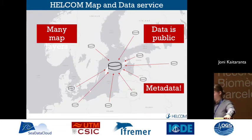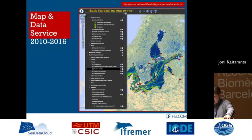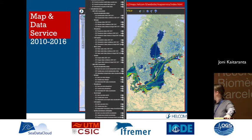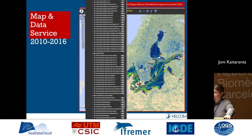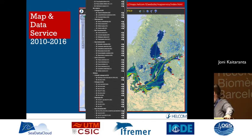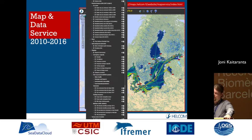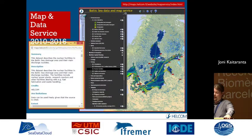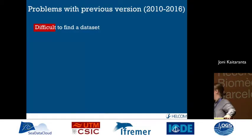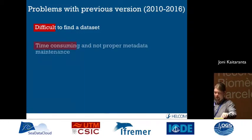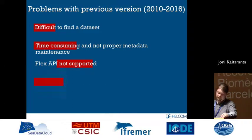Metadata is very important because you have to know where the data comes from. You can see the table of contents — it's quite packed with different maps. This is the previous version that we had for six years, with some development going on, but basically this was the current product. It also contained a metadata viewer as a pop-up, which was not very fancy. We did have problems: it was difficult to find datasets — you had to scroll down, and if you expanded the whole list it took forever. Metadata management was not proper, it was done in obsolete technology, and it was impossible to refer to a dataset.